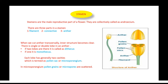Androecium is the group of stamens or microsporophylls. Each stamen has three parts: anther, connective, and filament. The anther contains two or one lobe, and each lobe has two chambers called pollen sacs or microsporangia. If the anther has two lobes, it is called dithecous; if there is only one lobe, it is called monothecous.